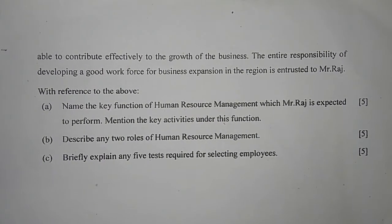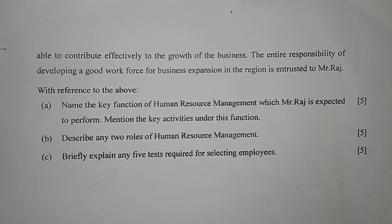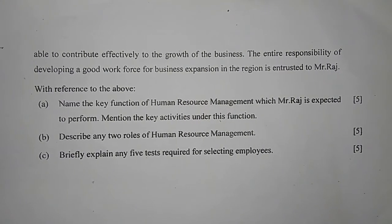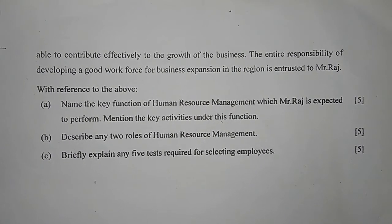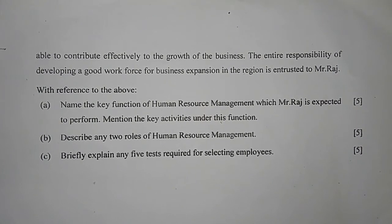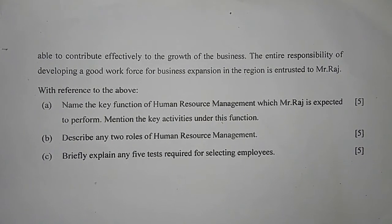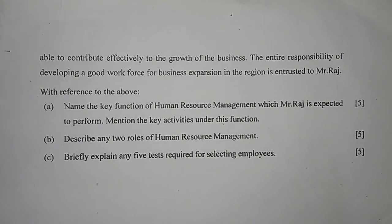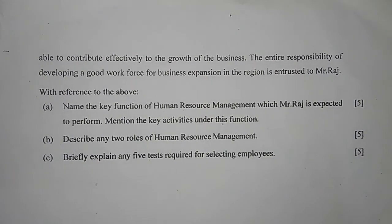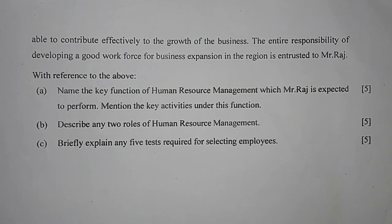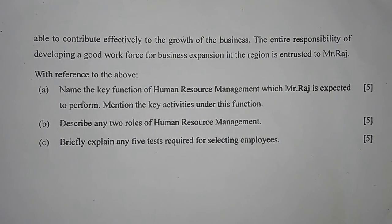Number C: briefly explain any five tests required for selecting employees. Number one, aptitude test — a starting phase test like an aptitude test. Number two, employment test — tests based on work behavior like a group discussion. Number three, selection interview — an interview with the HR manager to judge personality and skills face to face. Number four, medical examination — an important phase to know about the candidate's health. Number five, final approval — the candidate receives the offer letter and is approved for the job.